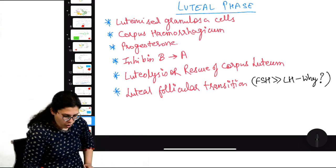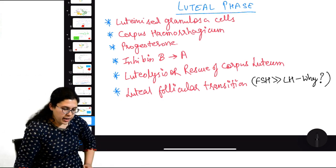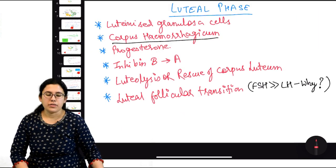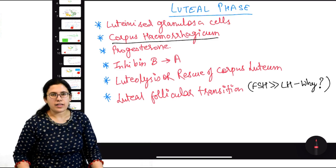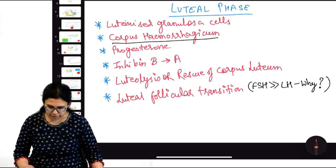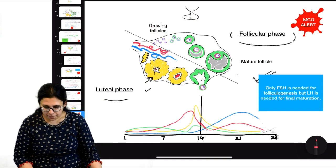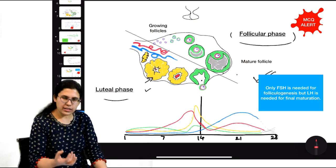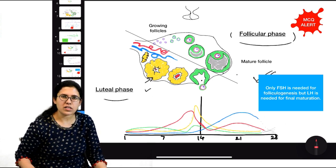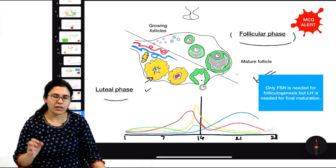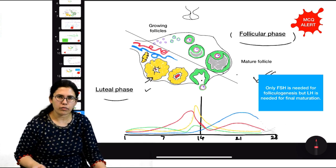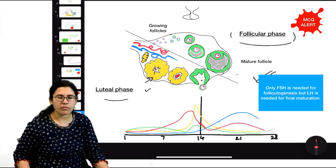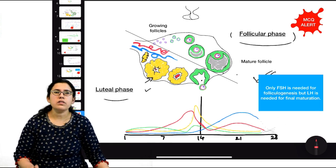After the egg is released, the luteal phase starts. The ejected oocyte (frozen at metaphase 2) is out, and capillaries start penetrating the structure. With the oocyte and follicular fluid gone, there is a cavity — capillaries fill this cavity with blood. This is now called corpus hemorrhagicum (corpus = body, hemorrhagicum = blood).